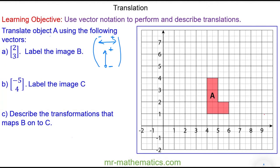We have the translation vector (2, 3) and this is going to move object A to create image B. I'll pick any vertex and translate it 2 to the right, because this is a positive 2, and 3 units up, because this is a positive 3. Then I'll pick a different vertex and perform the same translation: 2 to the right and 3 units up.